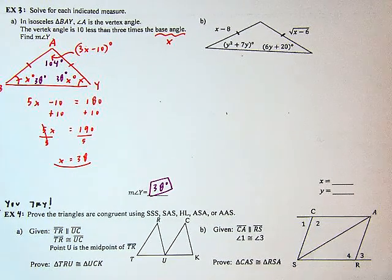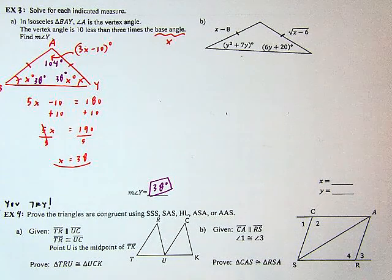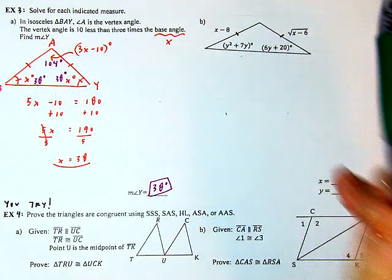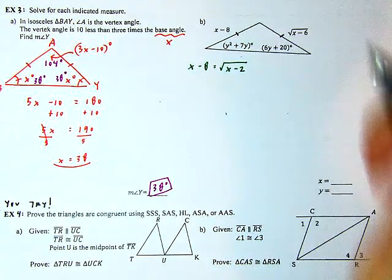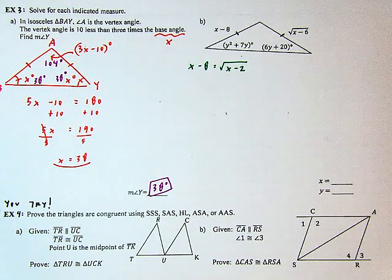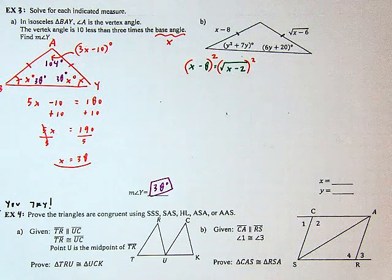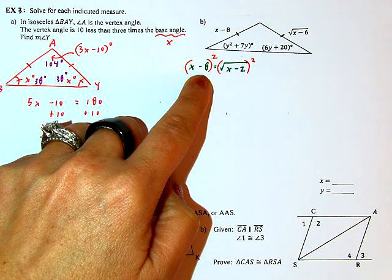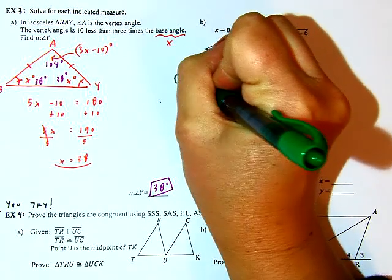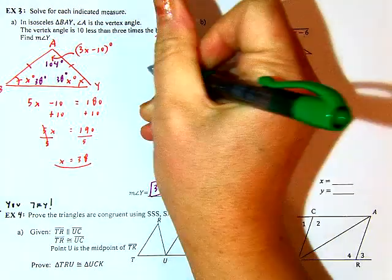Here I'm given an isosceles triangle — I can see that because at least two sides are the same. I want to solve for X and Y. For X, the two legs are congruent, so I can build the equation: X minus 8 equals the square root of X minus 6. The square root is already isolated, so I can reverse the operation by squaring both sides. I have to visualize that the left side is a binomial: X minus 8 times X minus 8, all equal to X minus 6.